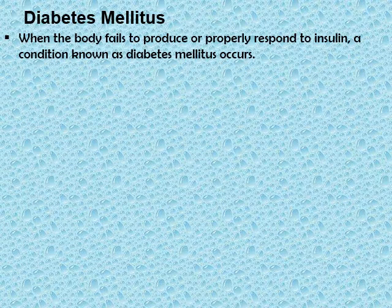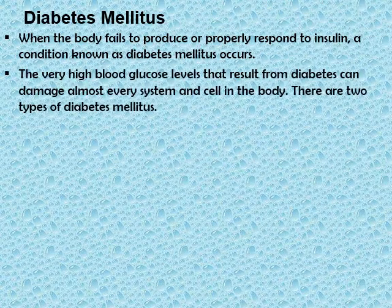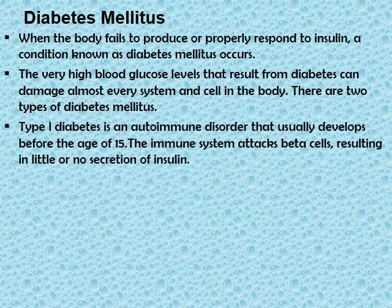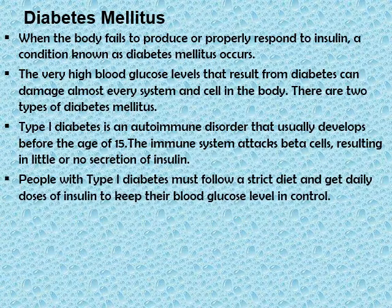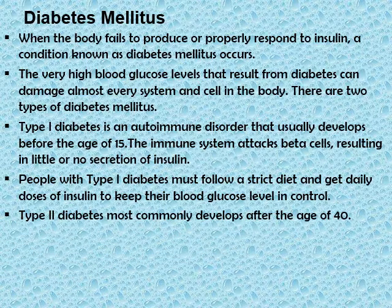A condition known as diabetes mellitus occurs when the body fails to produce or properly respond to insulin. The very high blood glucose levels that result can damage almost every system and cell in the body. There are two types: type 1 and type 2. Type 1 diabetes is an autoimmune disorder that usually develops in childhood before the age of 15. The immune system attacks beta cells, resulting in little or no secretion of insulin. People with type 1 diabetes must follow a strict diet and receive daily doses of insulin to keep blood glucose levels under control.